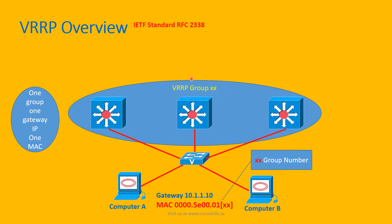You first need to configure the VRRP group number. From there, you can determine the MAC address with the format 0000.5E00.01XX, where XX is the group number. For example, if you configure VRRP group number 1, the MAC address will be 0000.5E00.0101.